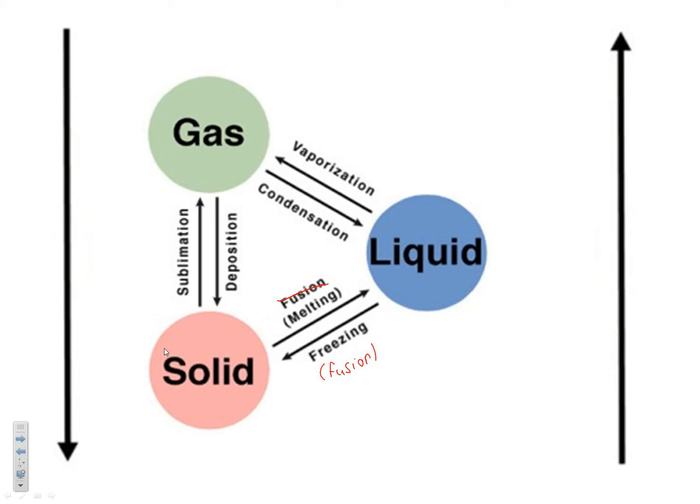Here's a list of all the different phase changes you have to know. Melting and freezing should be familiar, although you should know that process is generally called fusion. Then there's vaporization and condensation — vaporization is just a fancy word for boiling, when something goes from a liquid to a gas. And then there are two less common ones: sublimation and deposition.